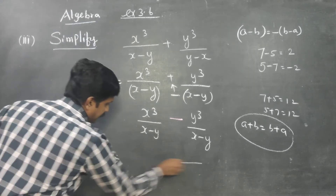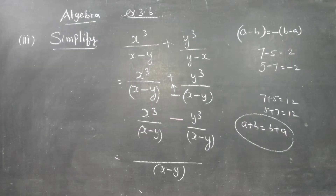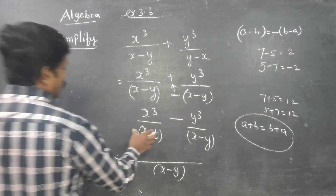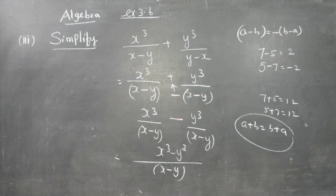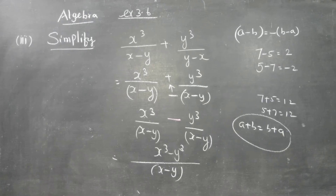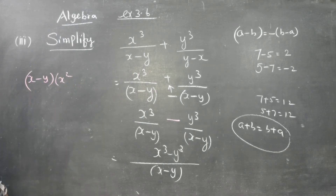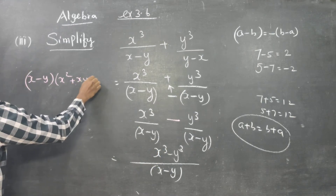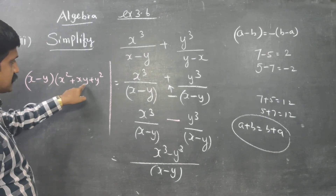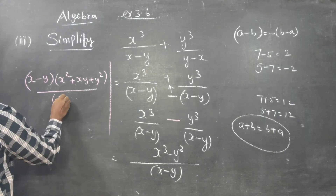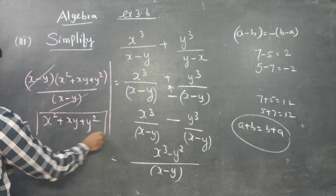The LCM is the same: x minus y. With the same denominator, we copy the numerator as x cubed minus y cubed. Applying the formula: a cubed minus b cubed equals a minus b times a squared plus ab plus b squared. So we get x minus y times x squared plus xy plus y squared, divided by x minus y. The x minus y cancels out, leaving x squared plus xy plus y squared as the final answer.